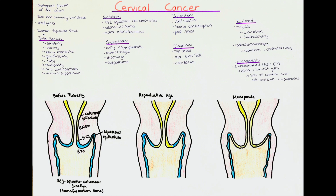Before we go further into the oncogenesis of these cancers, I would like to recap the structure of the cervix. The cervix is divided into an endocervix, exocervix, and a transformation zone. The endocervix is the part lying towards the uterus and the exocervix is lying towards the vagina. The endocervix has a simple columnar epithelium, while the exocervix has a stratified squamous epithelium.